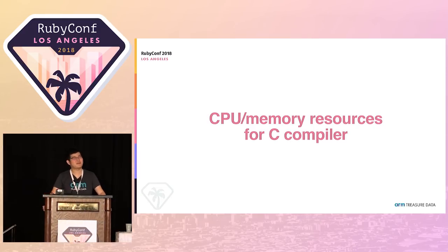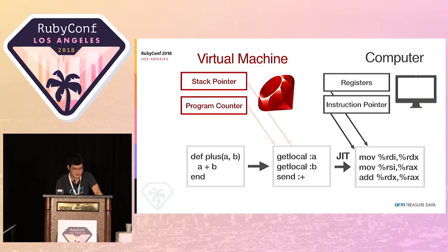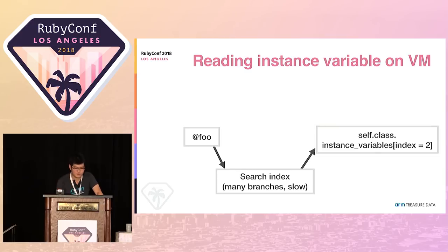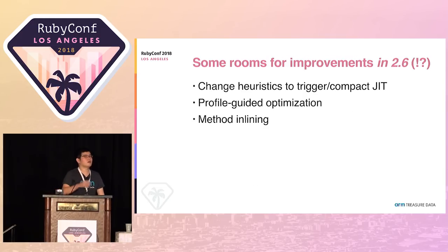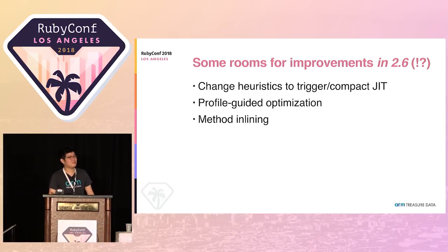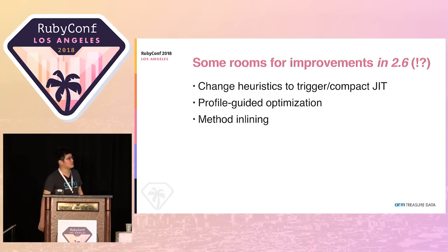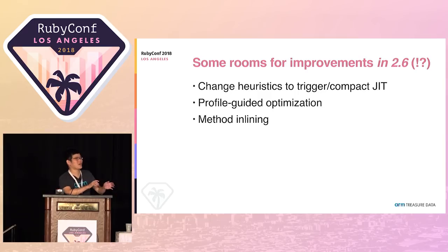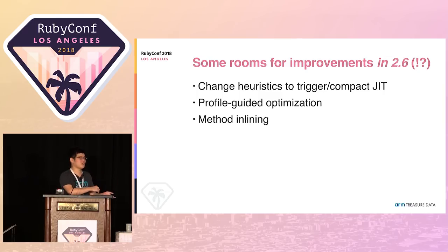Q: Am I using benchmarks other than OptCarrot? I sometimes use the Discourse benchmark, which is a Rails application and my main motivation to improve Rails performance. I'm also running Rails applications in production. Discourse takes a lot of time to measure, so I can't run it frequently. When I do optimization, I mainly test with OptCarrot and the Discourse benchmark.